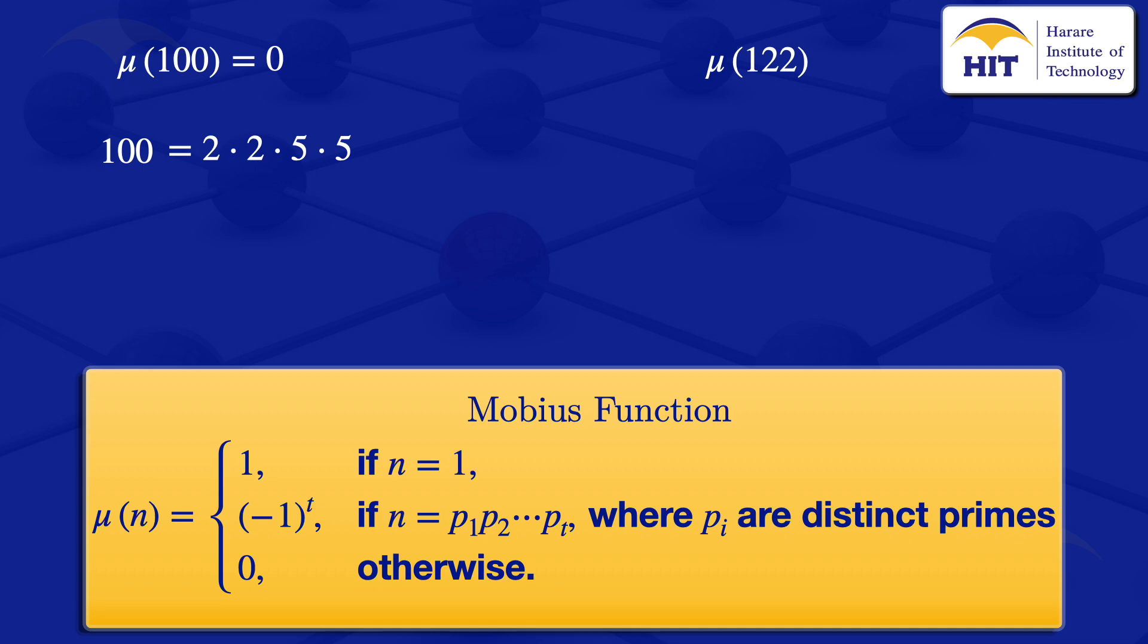Now going on to the next part, μ(122), I will look at the prime factorization of 122, and that's 2 times 61. So in this case, these two primes, they are distinct.